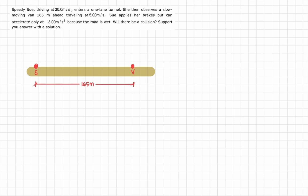The velocity of Sue is 30 meters per second. And then the van is 5 meters per second. Once Sue was able to see the van ahead of her, she applied her brakes, but then she only accelerated 3 meters per second squared. So Sue's acceleration is negative 3 meters per second squared. So our question is, will there be a collision? Will Sue be able to stop at a distance that cannot reach the van?